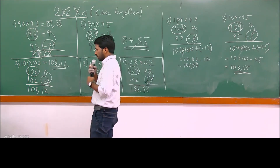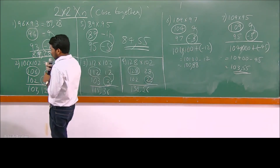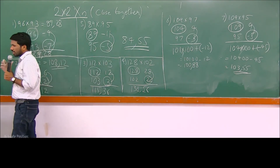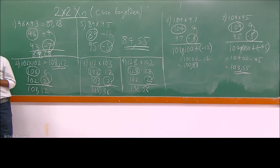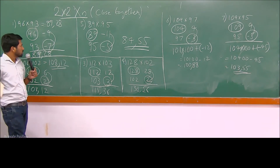That covers the case when one number is above 100 and one is below 100. Now, what if the numbers are near 1000 instead of 100?